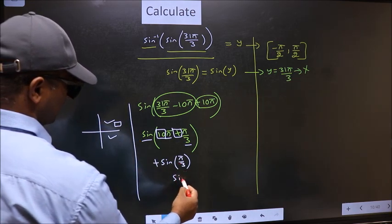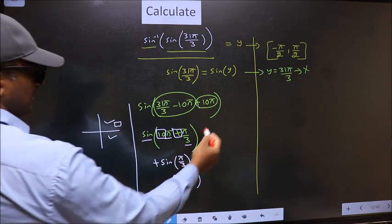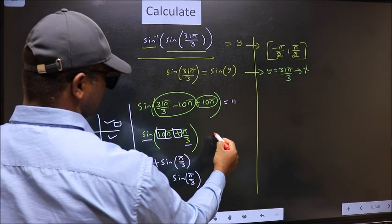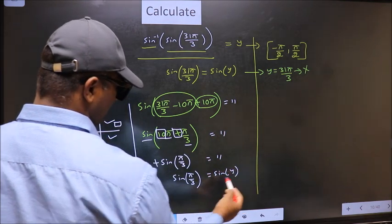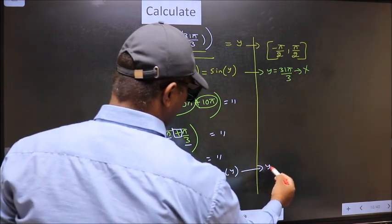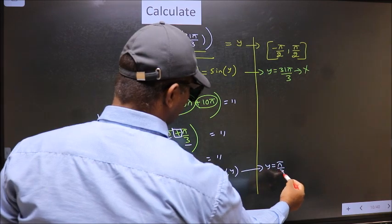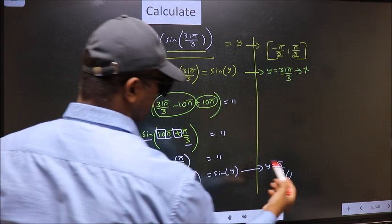Plus sin π by 3 is nothing but sin π by 3, and on the other side no change, so equal to sin y. Now comparing both sides, we get y to be π by 3. Does this lie in this interval? Yes. So this is our answer.